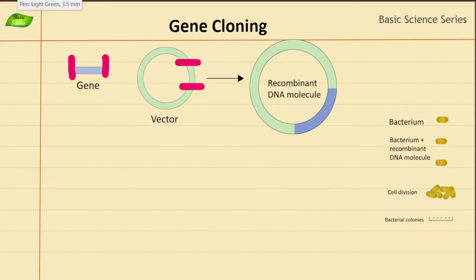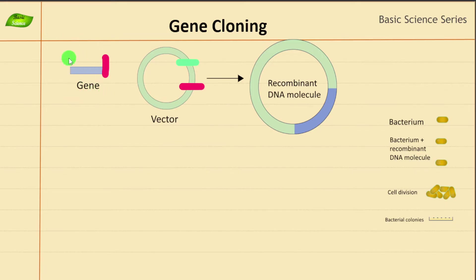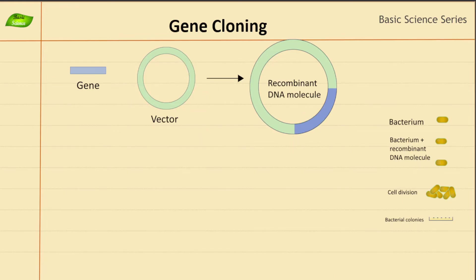If we use one enzyme at one site and a second enzyme at another site, we can do a double digestion. The ends generated can then combine together. We'll have a recombinant DNA molecule with matching ends. We then use an enzyme called ligase to complete the process of ligation, and we have that recombinant DNA molecule.